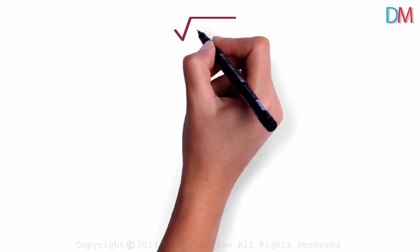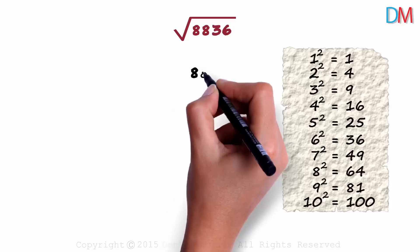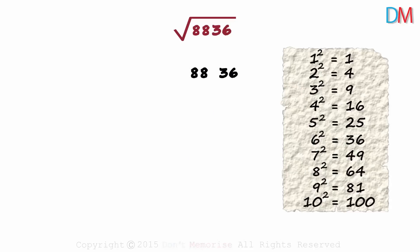We have to find the square root of 8836 using the technique we had seen in the previous video. To use the technique, we need to know the squares of the first 10 digits. And we also know that the square root of a 4 digit number will always be 2 digits long. And the number 8836 will give us the digits.